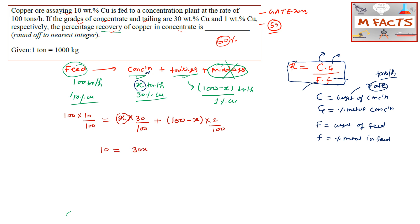Solving the equation 10 = 0.30x + (100 − x)/100, we get 900/29, which equals approximately 31.03 tons per hour. So x = 31.03 tons per hour is the weight flow rate of the concentrate.